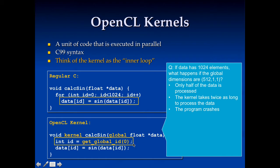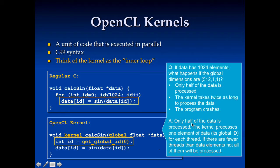Question: what happens if the data is 1024 elements long, but we use global dimensions that are only 512 long? What happens to the kernel? Well, in this case, we only process half the data. If the global dimensions only go up to 512, we're only going to calculate sine for values from 0 up to 512, so half the data won't be processed.